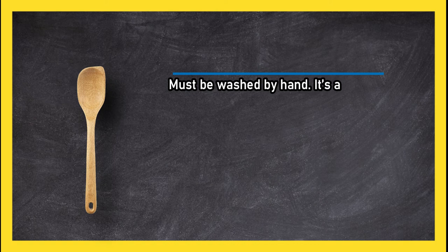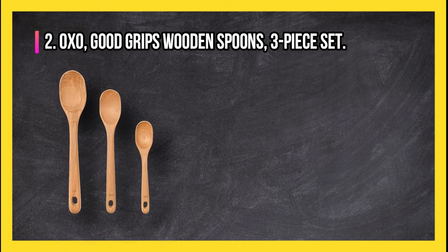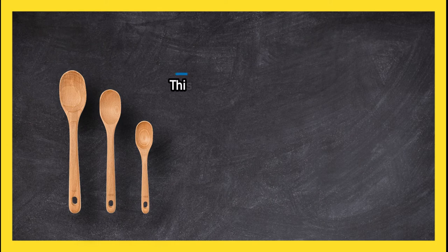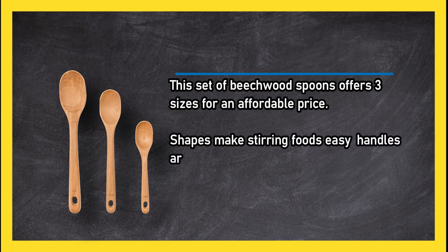At number two: Good Grips Wooden Spoons Three-Piece Set. This set of beech wood spoons offers three sizes for an affordable price. Shapes make stirring foods easy. Handles are comfortable to hold.